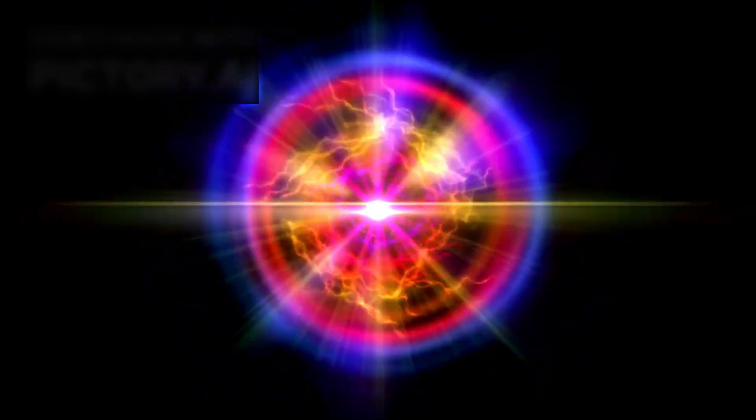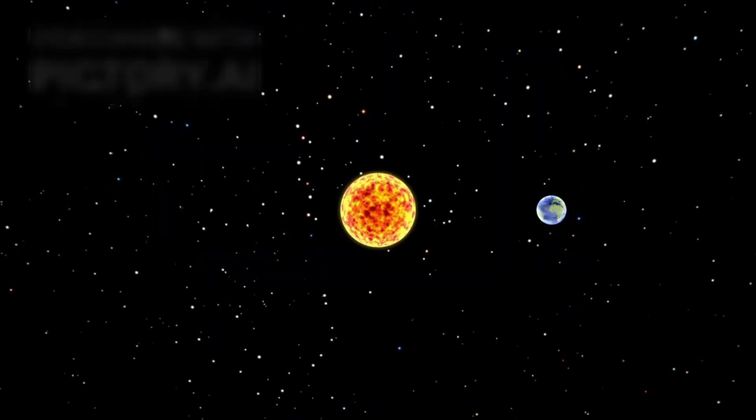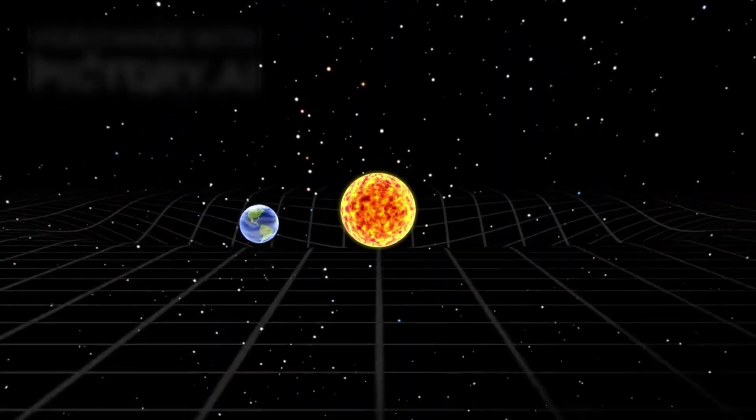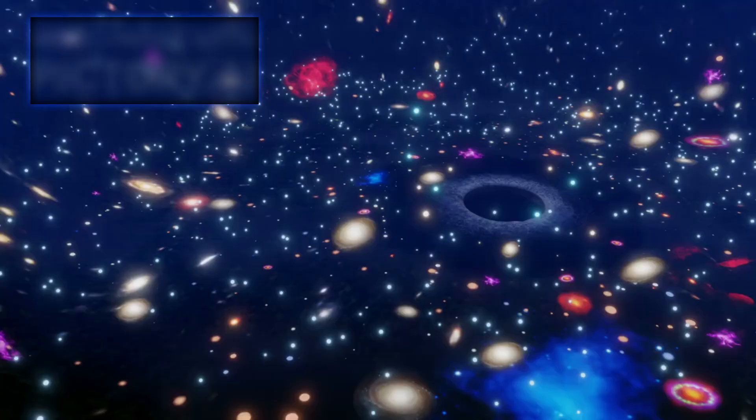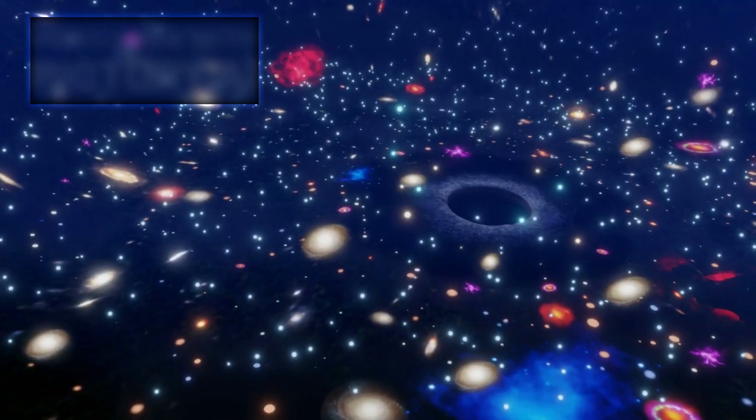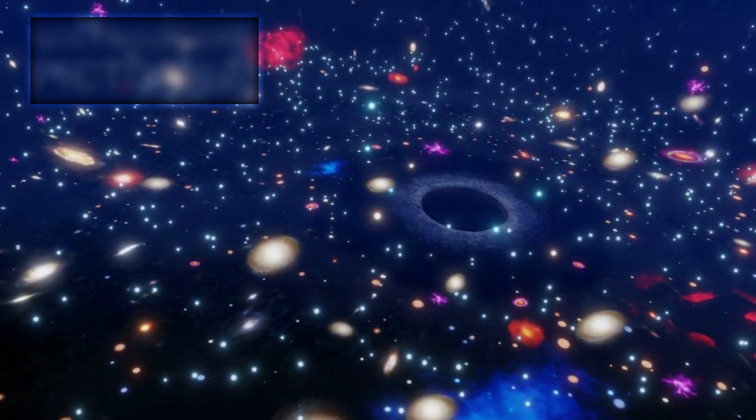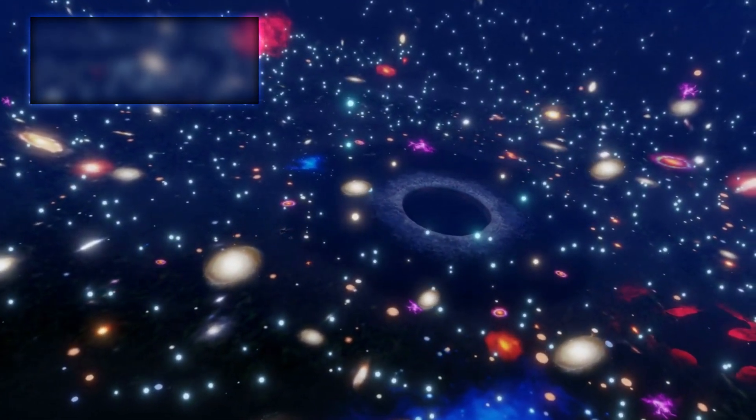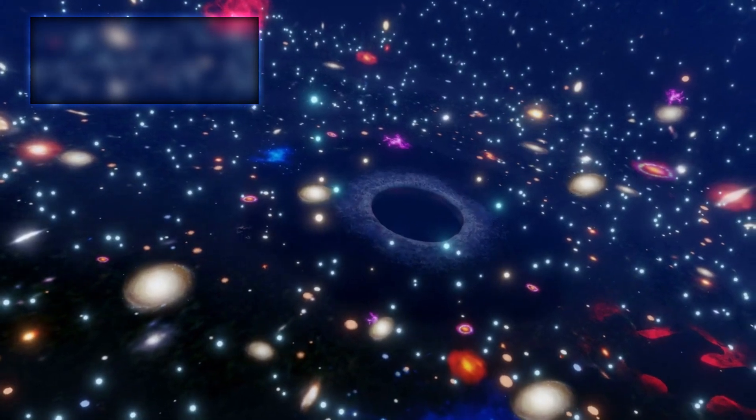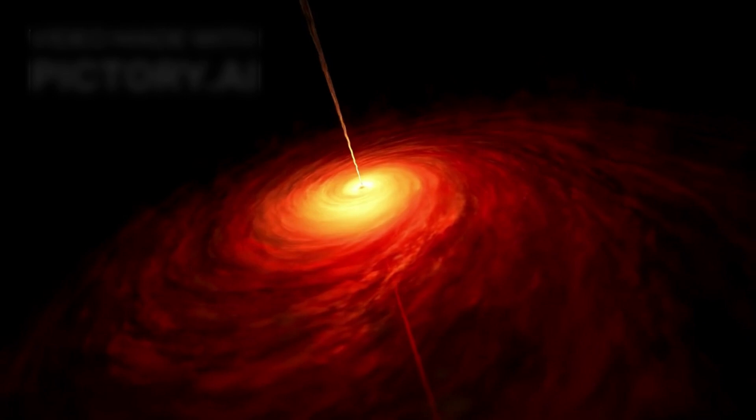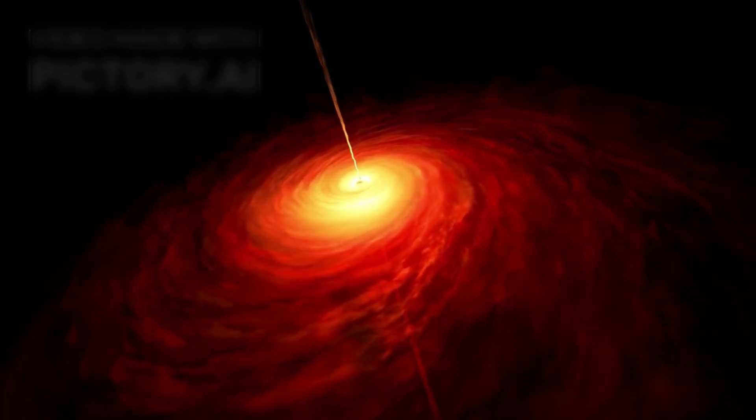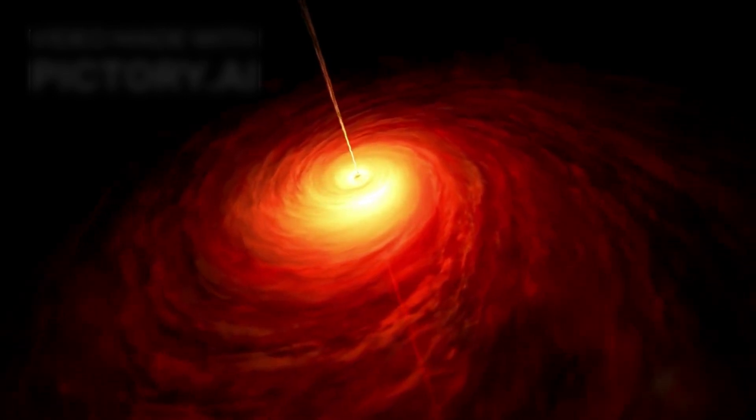The theoretical foundation of black holes dates back to Albert Einstein's general theory of relativity, formulated in 1915. This revolutionary theory redefined gravity, not as a classical force, but as a warping of spacetime caused by mass and energy. In 1916, just a year after Einstein's publication, German physicist Karl Schwarzschild found a solution to Einstein's equations that implied the existence of a gravitational point so dense that it would trap anything that came too close. He called it a dark star, a concept that would eventually evolve into what we now call a black hole.